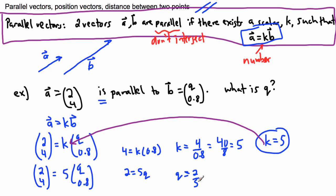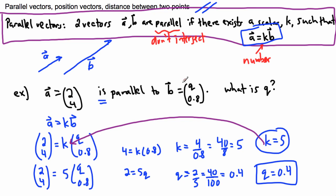Q equals 2/5. I don't need a calculator — I can multiply both numerator and denominator by 2 to get 4 over 10, and then by 10 again to get 40 over 100, which is 0.4. Remember, 40 over 100 is like a percent — cent means 100 in French, so dividing by 100 gives 0.4. So Q equals 0.4, meaning (2, 4) equals K times (0.4, 0.8).